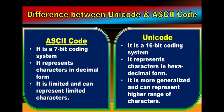ASCII is very limited, and in this coding system characters are represented in decimal form. Then another coding system came — Unicode, the Universal Coding System — which is a 16-bit coding system in which 2 to the power 16, that is 65,536 unique characters can be represented. So it can represent a higher range of characters, and Unicode represents characters in hexadecimal form.